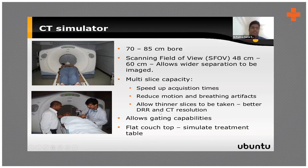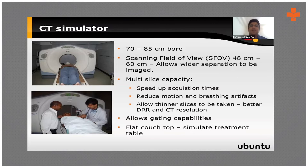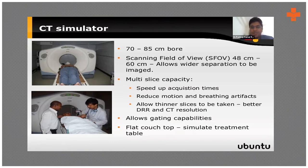We also have gating capabilities where we can combine scans with respiratory cycles. Serial scans can be taken during inspiration and expiration to see how much the tumor is moving, especially for lung or breast cases. Based on that, we can combine margins to avoid geographical misses which are possible with IMRT techniques.